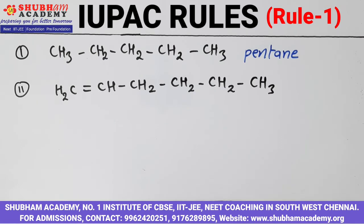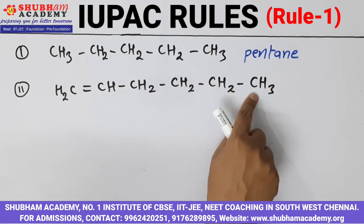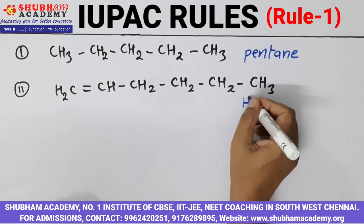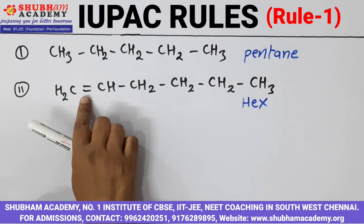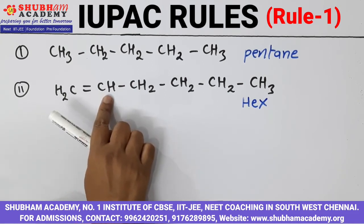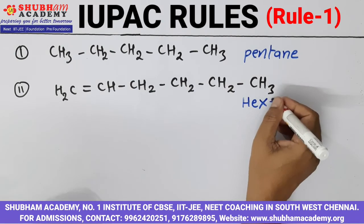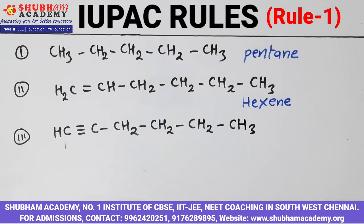One more example. Again here this is a straight chain. Counting gives 1, 2, 3, 4, 5, 6 — 6 carbon atoms in the parent chain. For 6 carbon atoms, the word root is hex. You have a double bond between the first and second carbon. For a double bond, the primary suffix is ene. So the name becomes hexene.